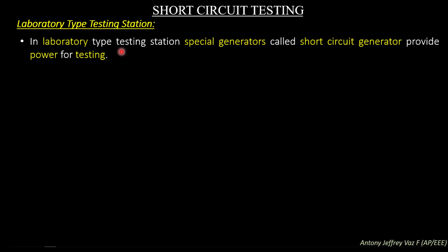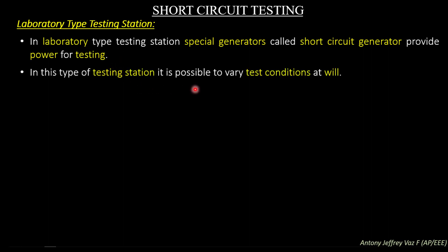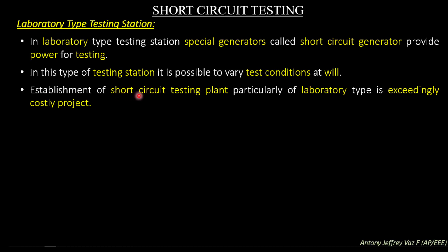In a laboratory type testing station, special generators called short circuit generators provide power for testing — a separate generator set is available for testing the circuit breaker. In this type of testing station it is possible to vary test conditions at will, so developers and researchers can test the circuit breaker according to design parameters. However, establishment of a short circuit testing plant of laboratory type is an extremely costly project.